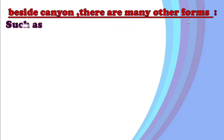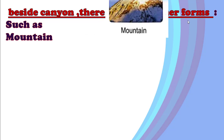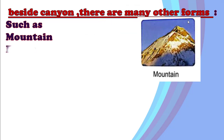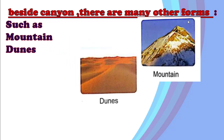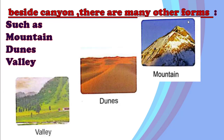Besides canyons, there are many other forms on the landscape, such as dunes that form on the sand desert or on the beach, and valleys like the Nile Valley.